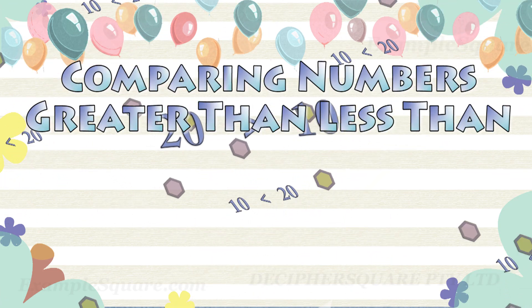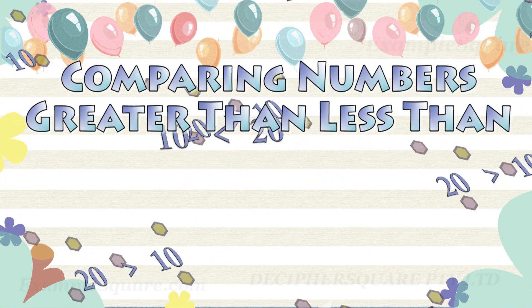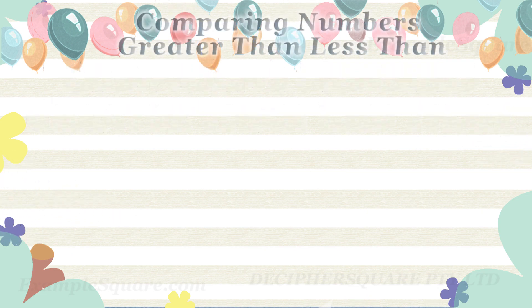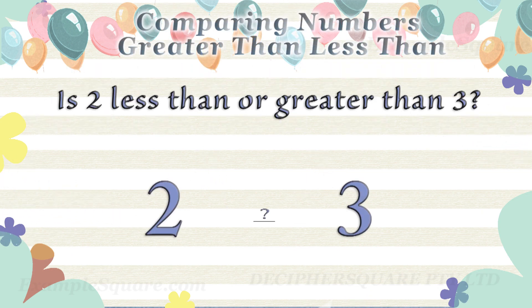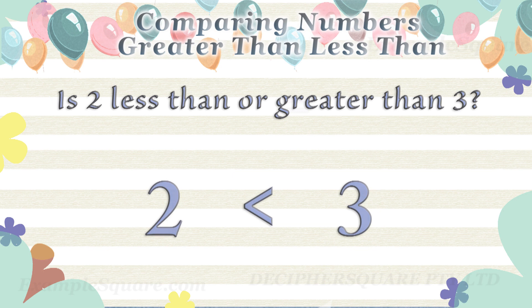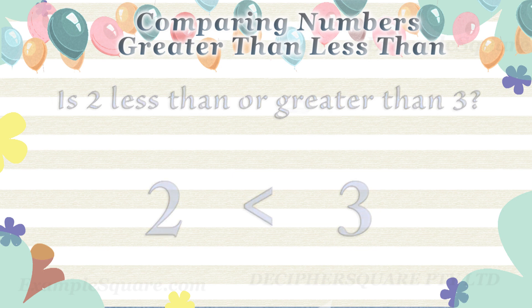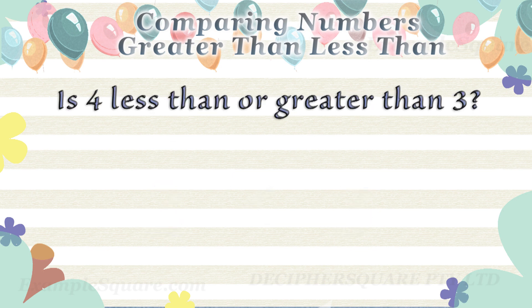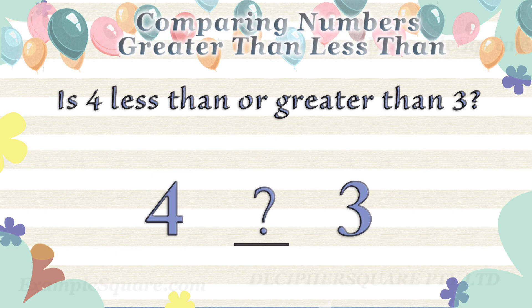Comparing numbers: greater than, less than. Is two less than or greater than three? Two is less than three. Is four less than or greater than three? Four is greater than three.